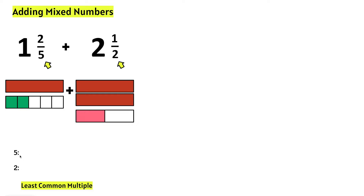Let's count by fives: five, ten. I will stop at ten because I know when I count by twos I will also have a multiple of ten.